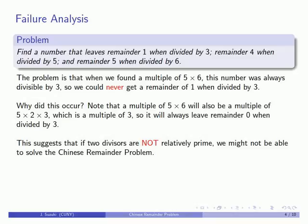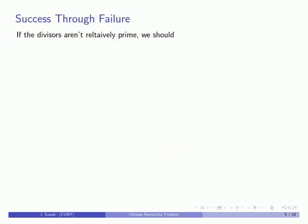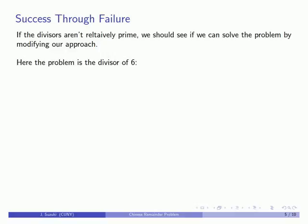This suggests that if two divisors are not relatively prime, we might not actually be able to solve the Chinese remainder problem, because those divisors will get, in some sense, tangled up. If the divisors aren't relatively prime, we should see if we can solve the problem by modifying our approach. The apparent problem here is the divisor 6 — we need a number that has a remainder of 5 when divided by 6.